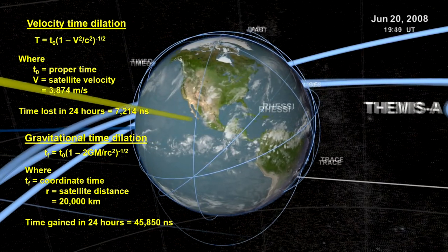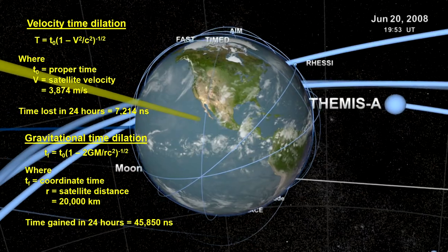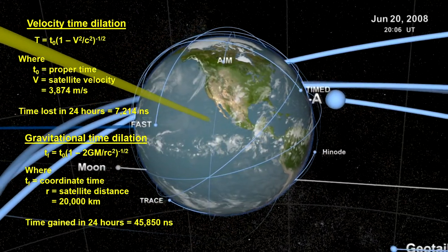The accuracy of our GPS system is strong evidence for the correctness of general relativity.